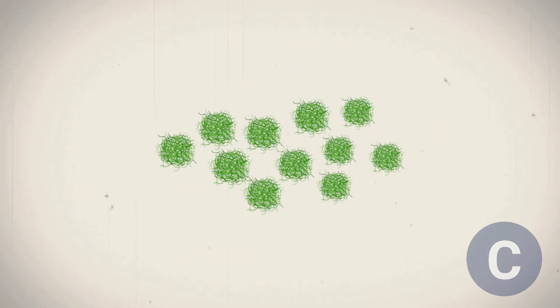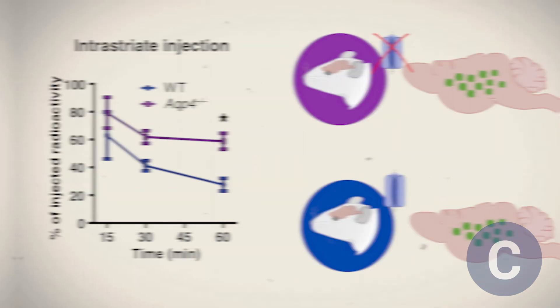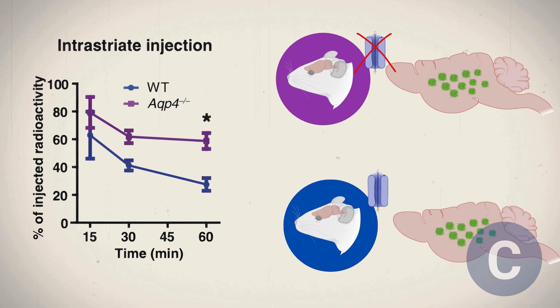To see if aquaporin-4 is also key in removing beta-amyloid, the researchers next injected radiolabeled and fluorescent amyloid beta into the brains of the mice. The results are shown in figures. The clearance was measured by tracking radioactivity in the brain at regular intervals for up to 60 minutes. In the wild-type mice with aquaporin-4, shown in blue, the drop in radioactivity shows that beta-amyloid was cleared quickly.